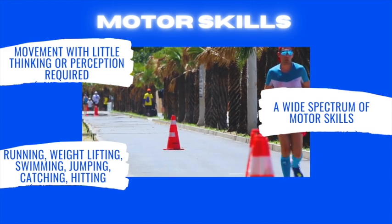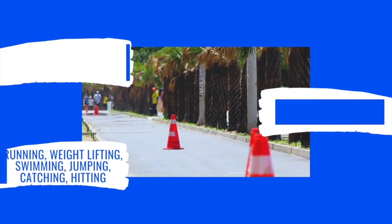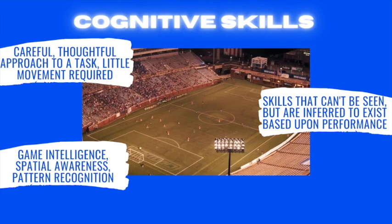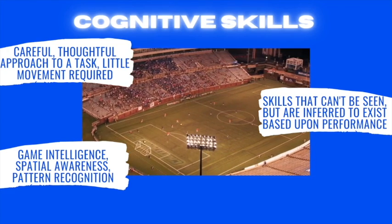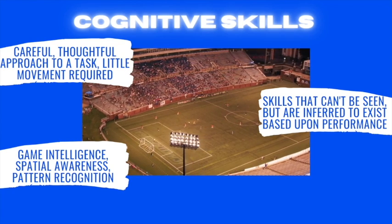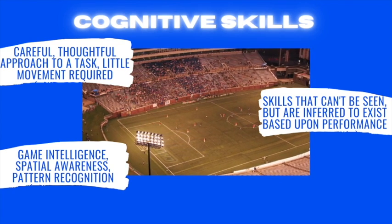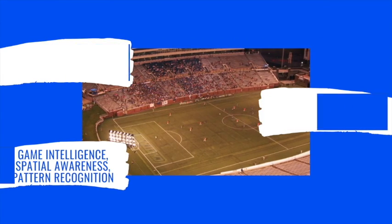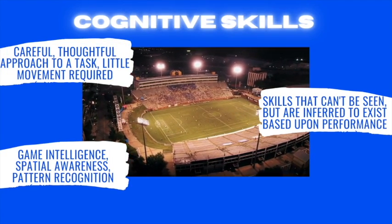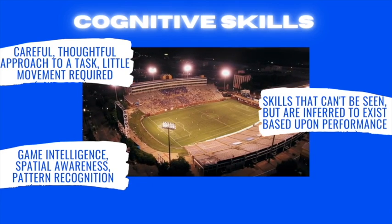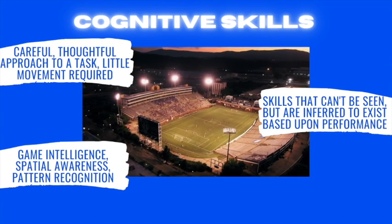Cognitive skills involve a careful, thoughtful approach to a task with little movement required — things like game intelligence, spatial awareness, and recognising patterns in play. As you can see with the bird's eye shot of football, they all move around the pitch in almost a rectangle area. Skills can't really be seen but are inferred to exist based upon performance, and cognitive skills and motor skills help to make up many game performances. You do require both.